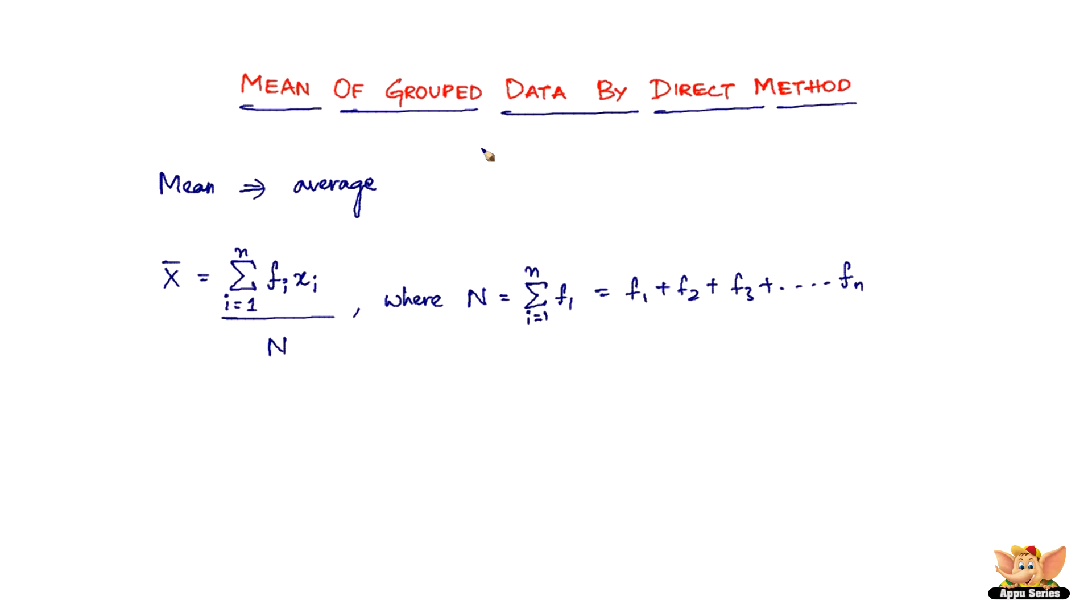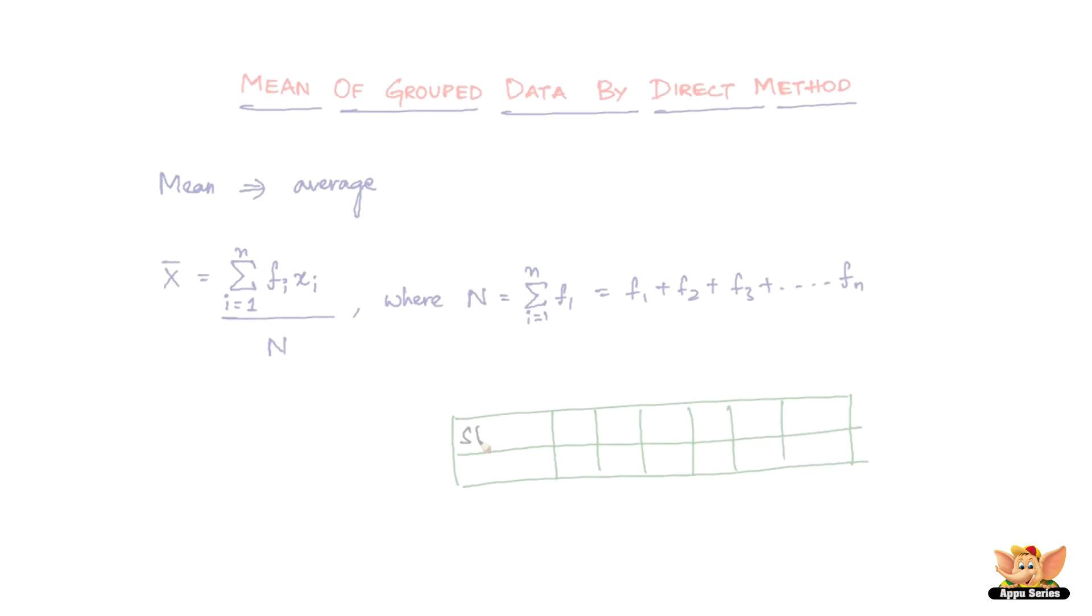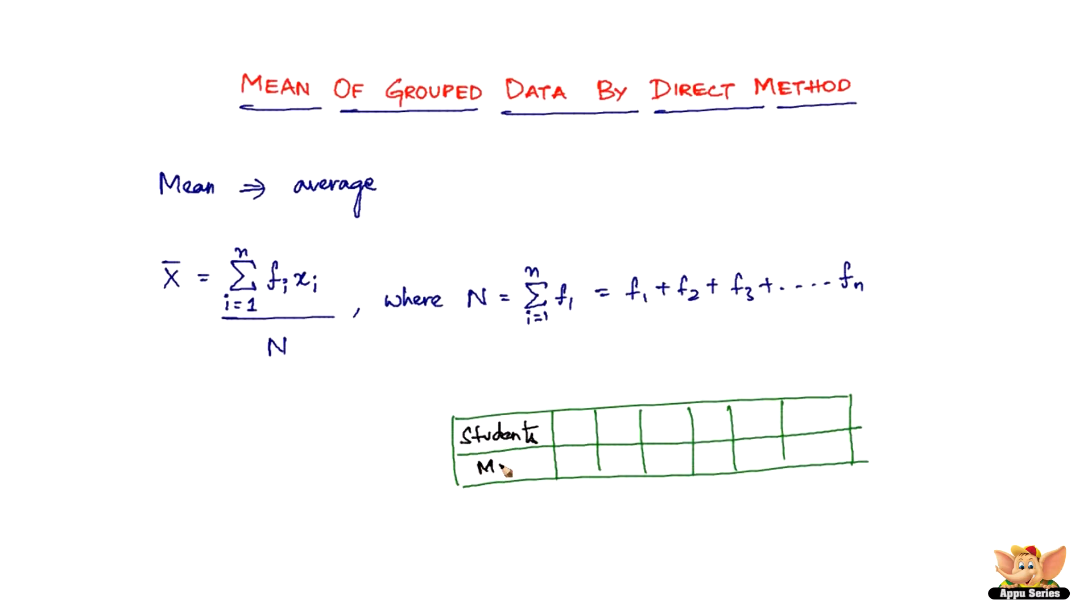Say for example, let me draw a quick table here. Say we've got students here and then the marks that they obtained here. So students are say 6, 7, 10, 9, 8, and 3. And then say out of 25, 6 people obtained 22, 7 of them obtained 21, 10 of them obtain 17, 9 of them obtain 19, 8 of them obtain 20, and 3 of them obtain 23 marks. So now this is the variate, this is the marks, and this is the frequency.